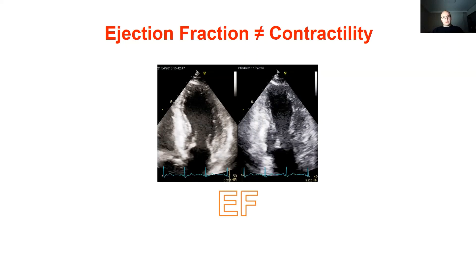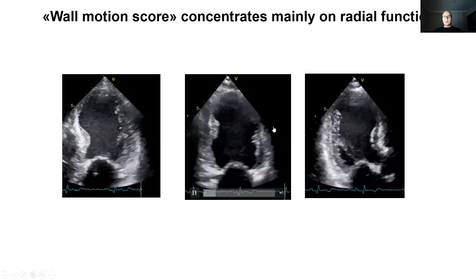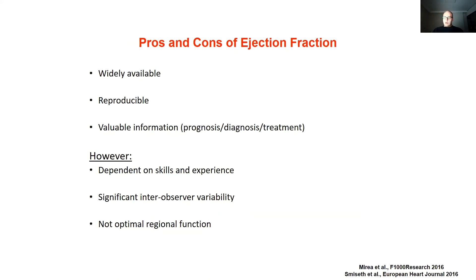The main goal of echocardiographic examination in most cases is to evaluate the function of the left ventricle. Ejection fraction and wall motion scoring have been used for this purpose. Ejection fraction can be calculated by all imaging modalities and the Biplane-Simpson method is recommended for echocardiographic evaluation. We can say that ejection fraction is widely available, somehow reproducible, and related with diagnosis, prognosis, and treatment response.